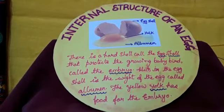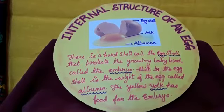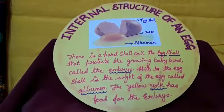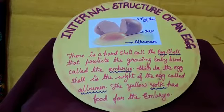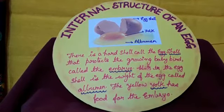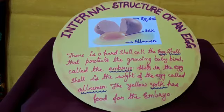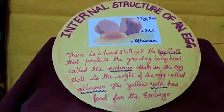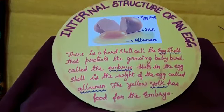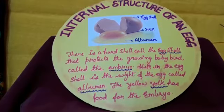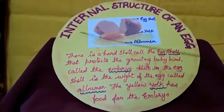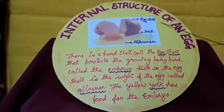Animals reproduce by two ways. Some animals give birth to their young ones and some animals lay eggs. Animals that give birth to their young ones are called viviparous animals, and animals which lay eggs are called oviparous animals. Today we will discuss about the internal structure of an egg.